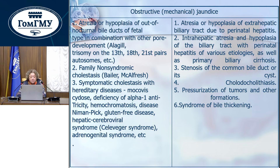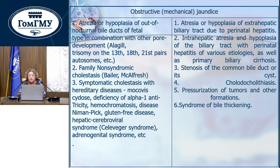Symptomatic cholestasis with hereditary diseases, for example cystic fibrosis, deficiency of alpha-1-antitrypsin, and so on. Acquired forms include atresia or hypoplasia of extrahepatic biliary ducts due to perinatal hepatitis, intrahepatic atresia and hypoplasia of biliary ducts with perinatal hepatitis of various etiologies, stenosis of common bile duct, choledocholithiasis, and so on.